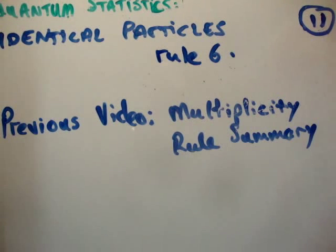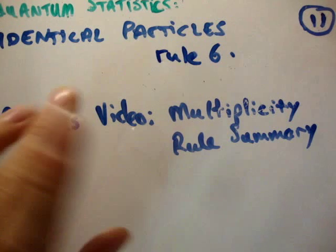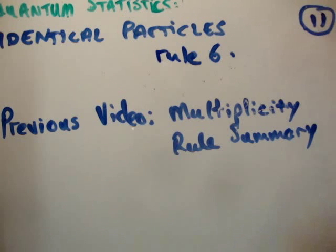Okay, in this video I'm going to continue on with my tutorial videos on quantum statistics. This video is on identical particles. We should probably call it rule number 6, and that's what I'm going to do. It is tutorial number 11, and the previous video was a multiplicity rule summary. To be honest, I probably should have swapped the order, but this is the way I'm recording it, and that's that.